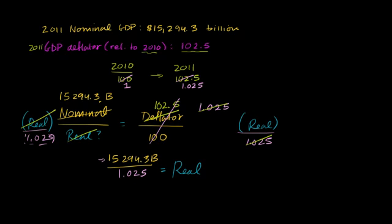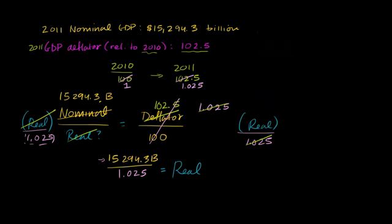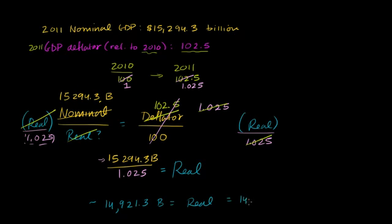I'm going to need a calculator to figure this one out. We'll do everything in billions: 15,294.3 divided by 1.025 gives us 14,921.3. So our real GDP is equal to $14,921.3 billion — rounding slightly. That is our real GDP: 14,921.3 billion, or the same thing as $14.9213 trillion in 2010 dollars.